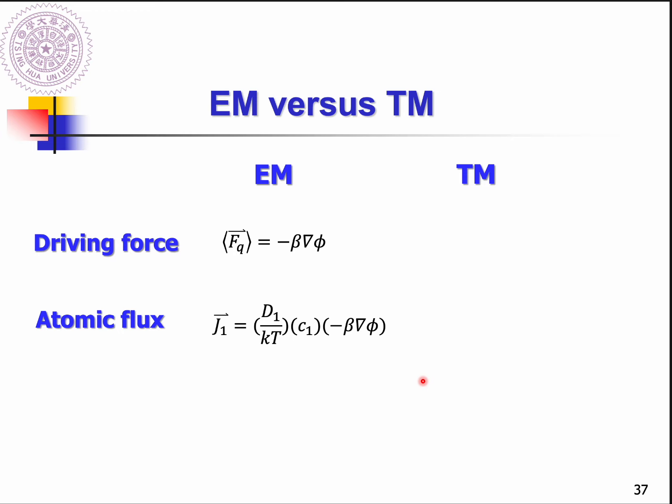To me, the easiest way would be to apply the electrical field for a while. Then after a while, you can check whether there is void formation and extrusion on your materials. That would be the easiest way to estimate whether EM happens in your material system or not.